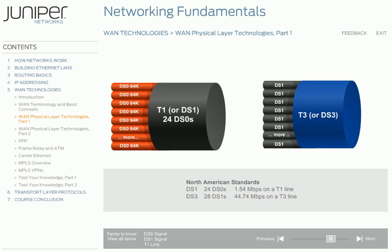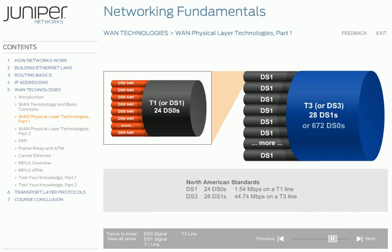In addition to a T1 line, you might also have heard of a T3 line, which is also known as a DS3. T3s are also built on the base DS0 signal. A T3 is 28 DS1s, or 672 DS0s, bundled together. Many people use the terms T3 and DS3 interchangeably as well. Like DS1s and T1s, a DS3 is the electrical signal carried on a T3 line, which is also copper-based, running at 44.74 megabits per second, including some overhead bits to provide bit stuffing, alignment, error checking, and in-band management.